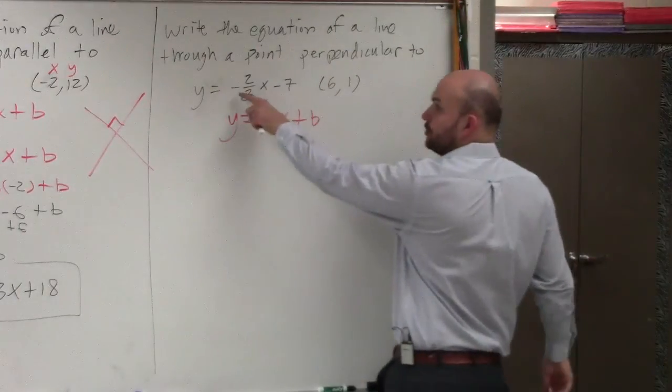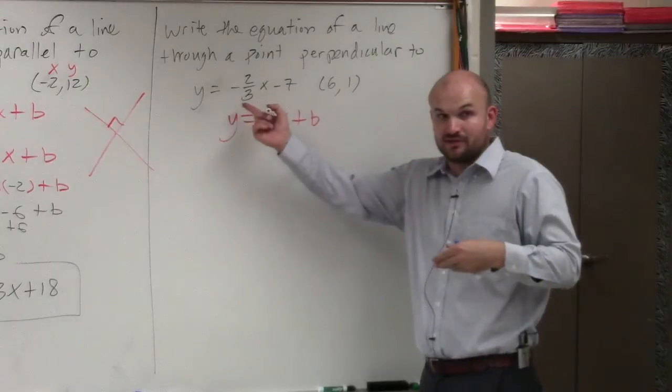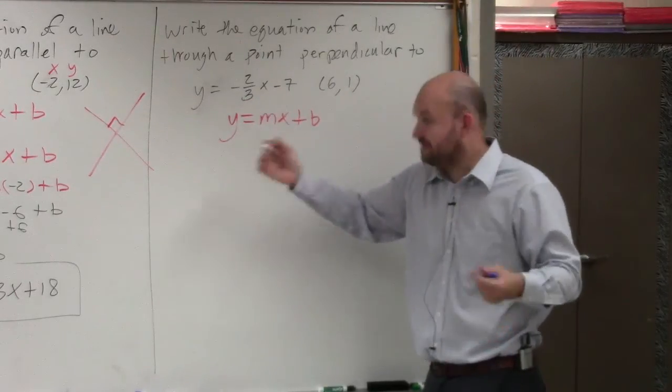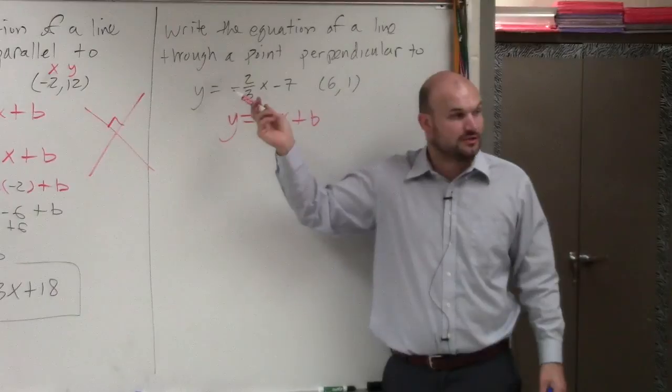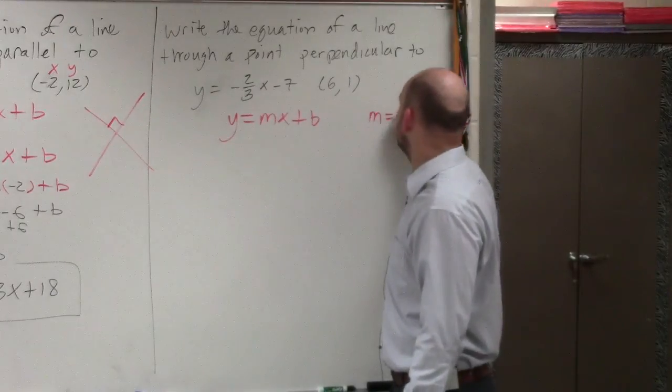So if my slope in this equation is negative, and I want to write an equation that's perpendicular to that, my new slope has to be positive. And then they're also reciprocals of each other. So if I have 2/3, my new slope is going to be 3/2.